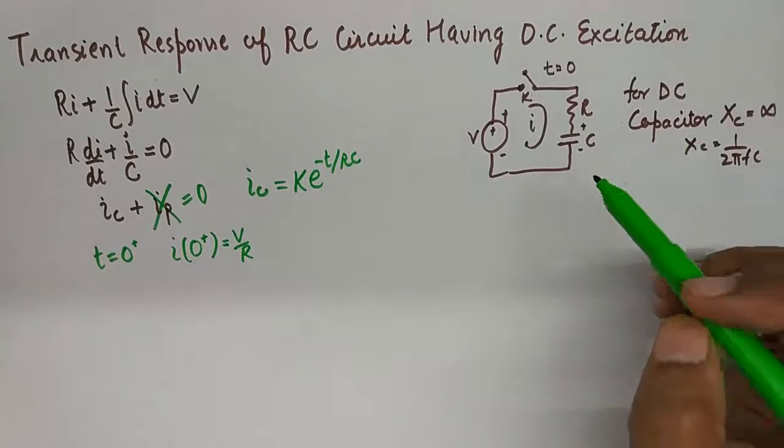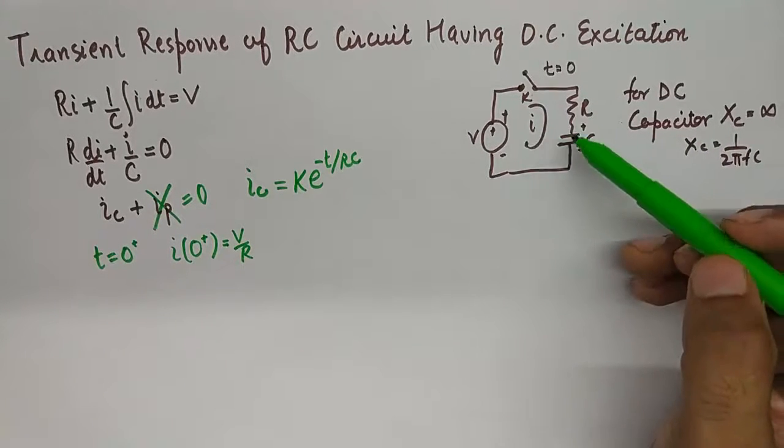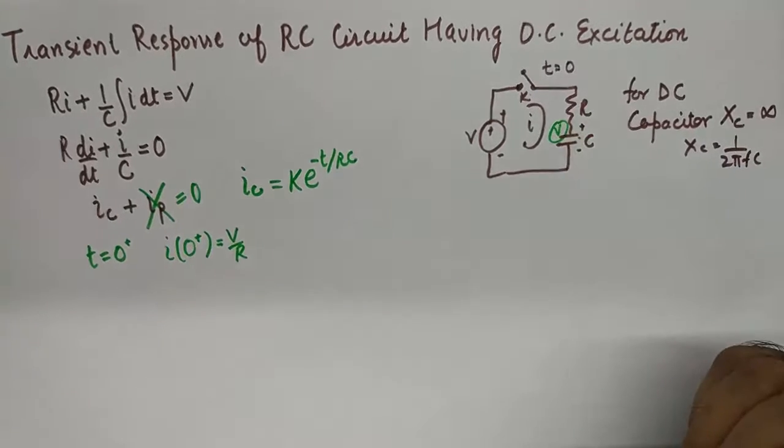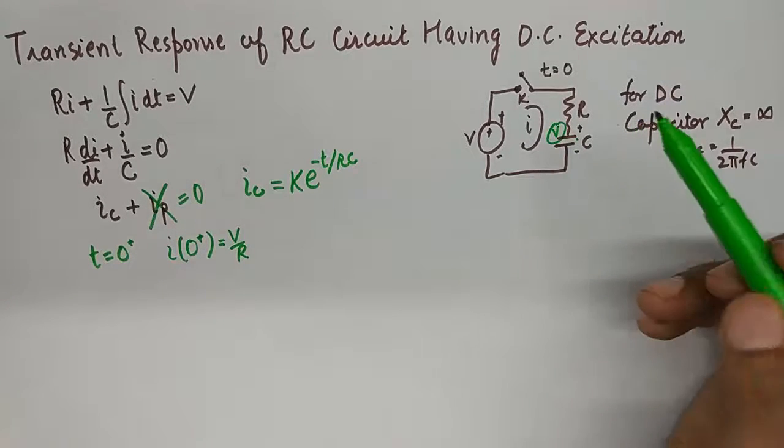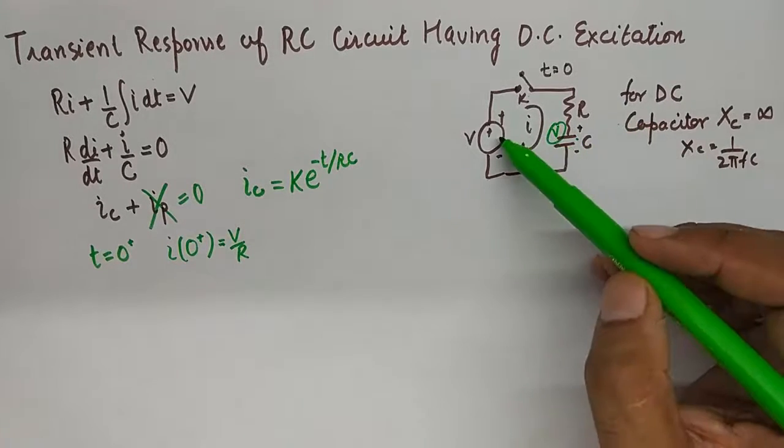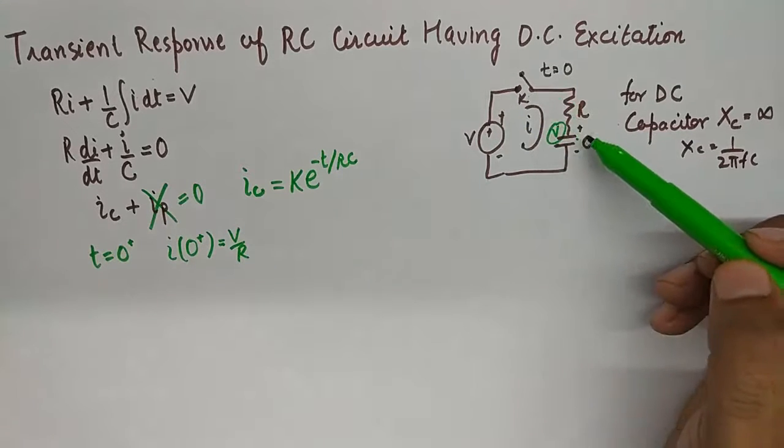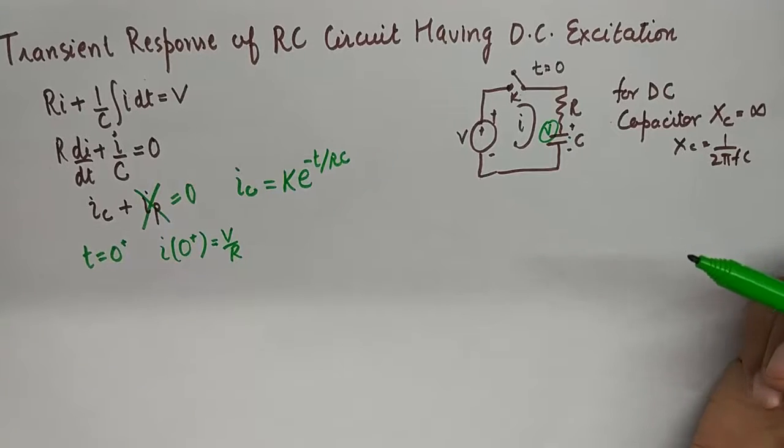The reason why no current flows in a DC circuit having a capacitor is that an equal amount of V gets developed here at the capacitor. Because of which there is a tug of war between this voltage source and the voltage being developed at the capacitor. That results in no flow of current eventually.